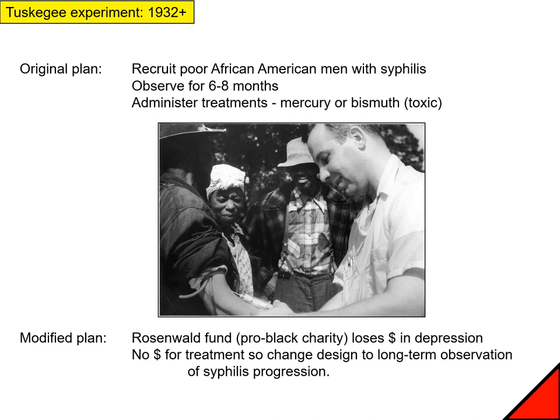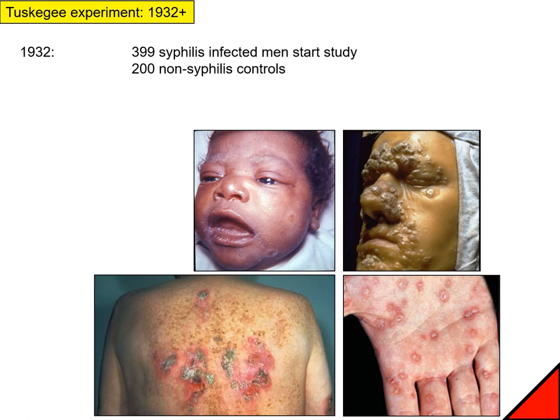The next slide has some images that might be disturbing. This is what syphilis looks like. In 1932 about 400 men with syphilis began the study and about 200 men without syphilis served as controls. The effects of syphilis can be quite severe — it can cause open lesions on the skin. This image shows a baby that caught syphilis from its mother, experiencing fairly severe health problems.